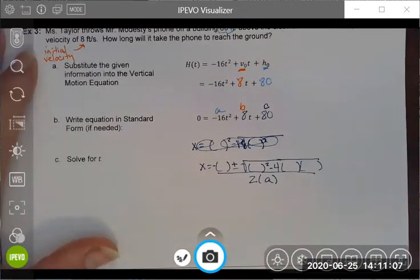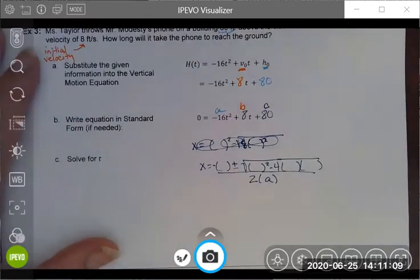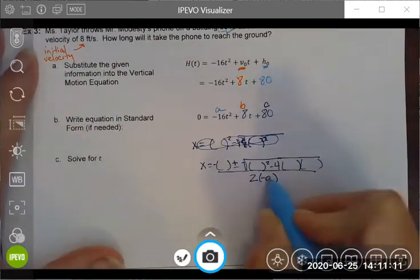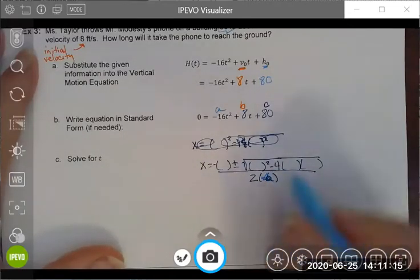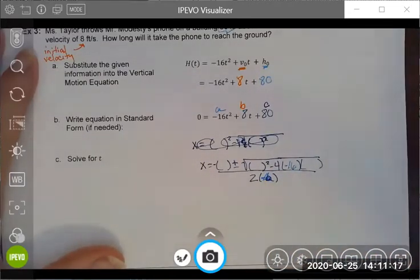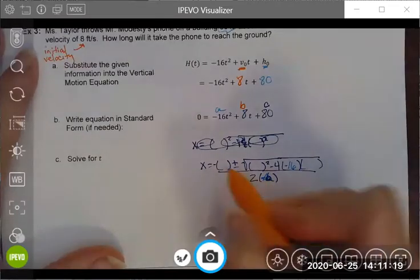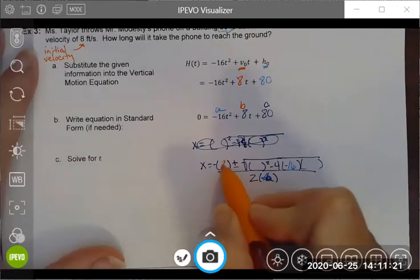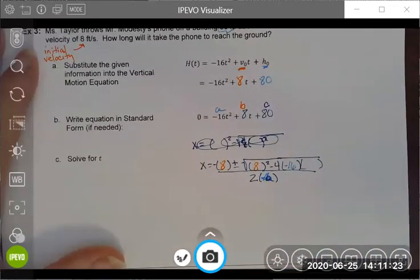My b value was a positive 8, and lastly my c value was 80.